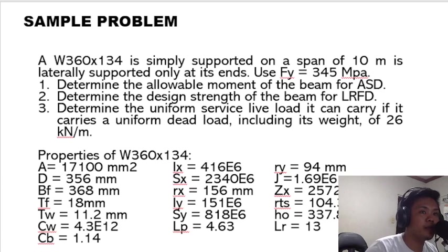The properties of W360 by 134: A is equals to 17,100 mm². D is equals to 356 mm. BF is equals to 368 mm. TF is equals to 18 mm. TW is equals to 11.2 mm.